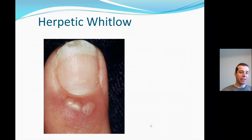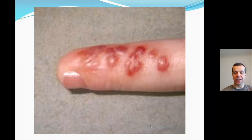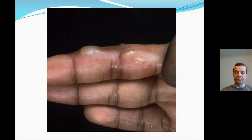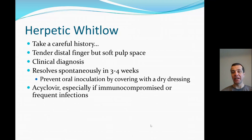Herpetic whitlow may appear on the dorsal aspect of the finger over the eponychial fold, on the lateral aspect showing a hemorrhagic base of the vesicle, or on the side of the finger where it may be confused with an abscess. A careful history is essential. On clinical exam the pulp is soft and the infection is not extending there — this is essentially a clinical diagnosis. Herpetic whitlow resolves spontaneously within a few weeks. Patients should be counseled to prevent oral inoculation by covering the hand lesion with a dry dressing. In immunocompromised patients or those with frequent infections, oral antiviral treatment with acyclovir is recommended.